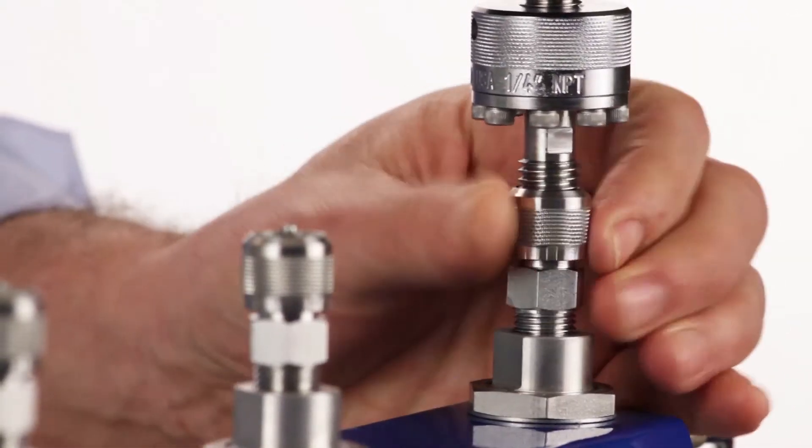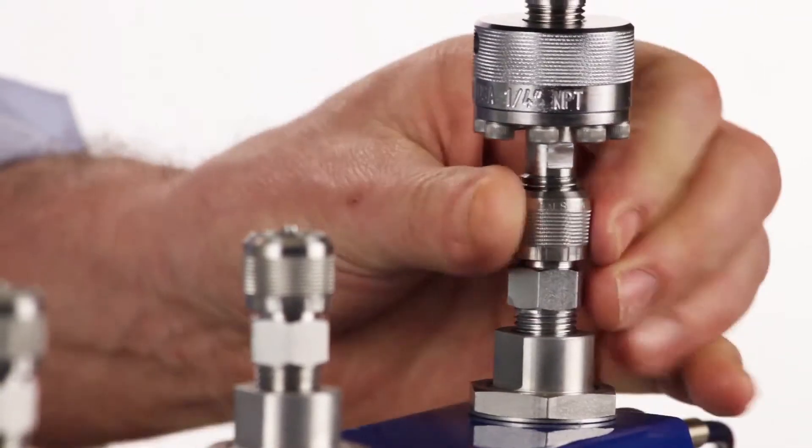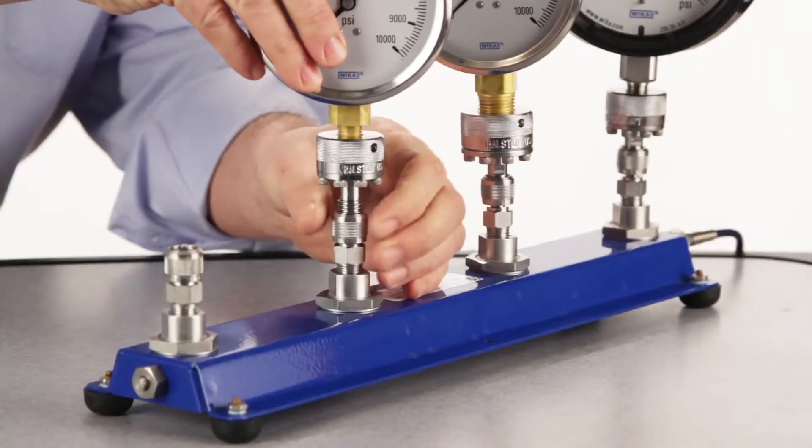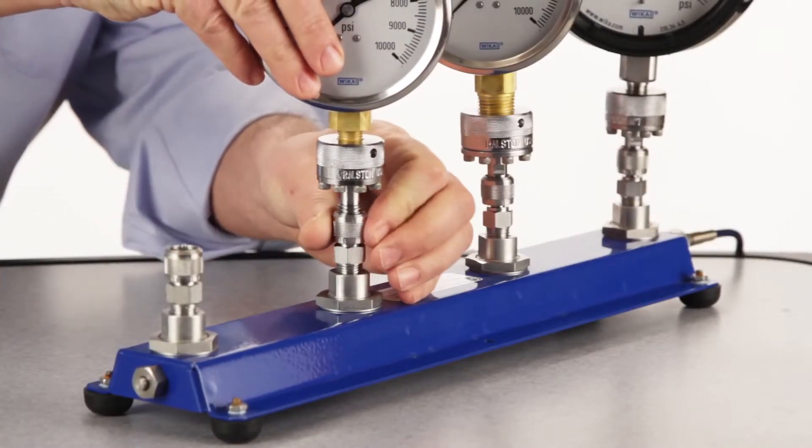The other side can be mounted directly to a Quick Test XT fitting, such as those on our calibration manifolds, again without tools. It can also connect directly to a Ralston Quick Test XT hose.